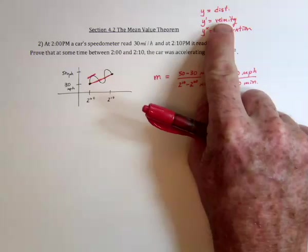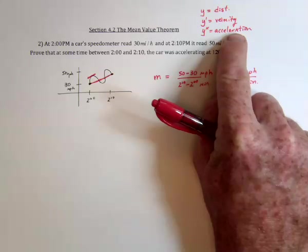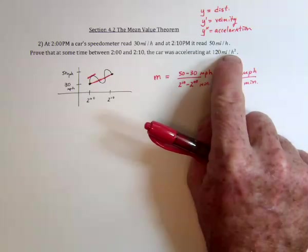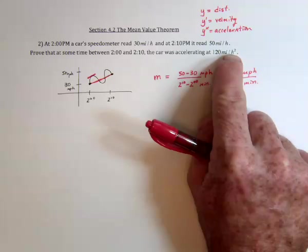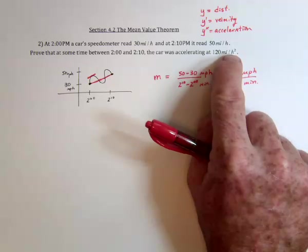And then since this one is over time, and this one is over time again, we get the result. It's over time squared, hours squared.